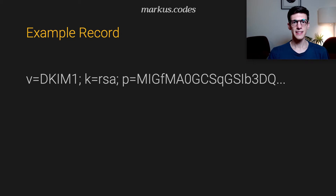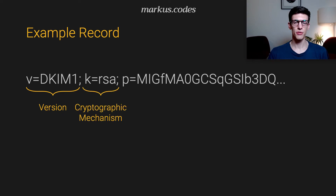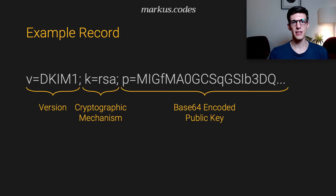And this is how such a record can look like. It contains three parts. The first one indicates that it is a DKIM record and the version of the DKIM record. The second part includes information about the cryptographic mechanism that is used — in that case it is RSA. And the third part is the base64 representation of your public key.